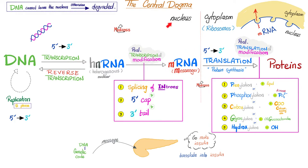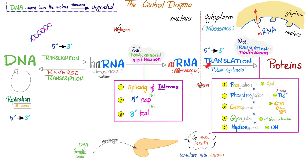The mRNA will leave the nucleus — because all of this happened in the nucleus — and will go to the cytoplasm through the nuclear pores. Outside the nucleus, i.e. in the cytoplasm, translation, or protein synthesis, takes place. But these proteins are not ready yet to function. We need to modify them.